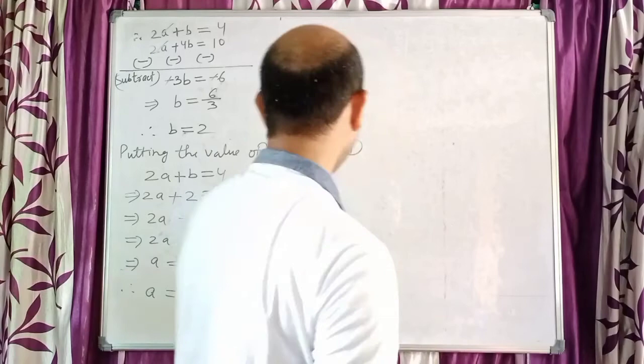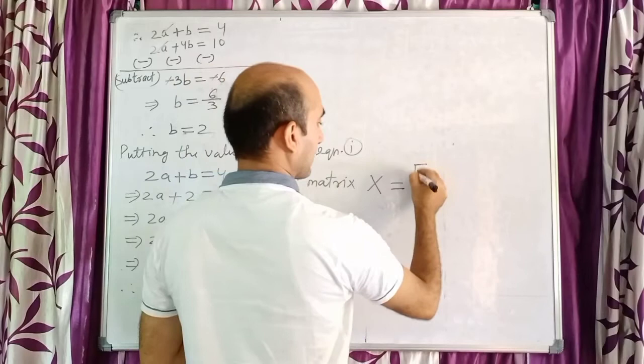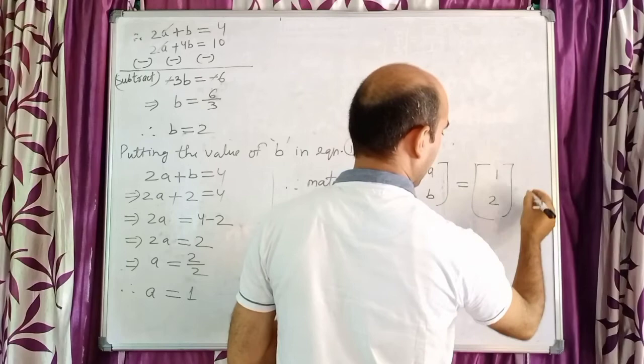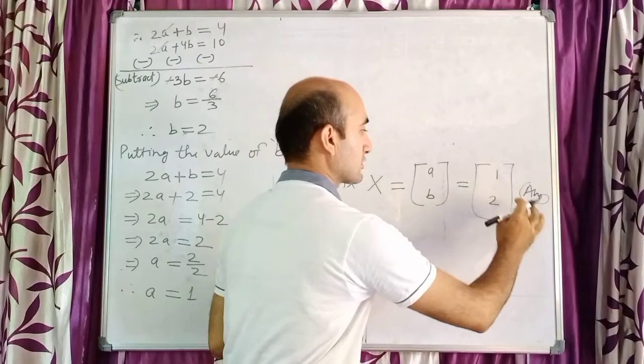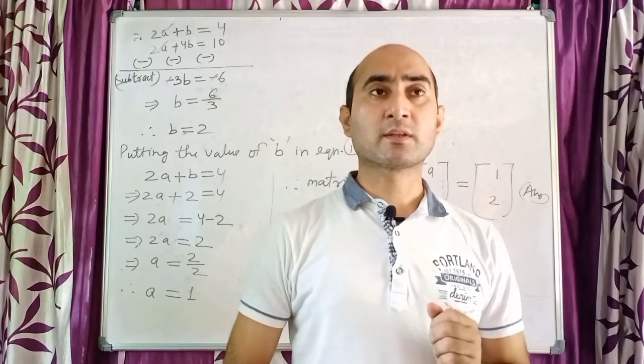Since matrix X was written as [a; b], and a = 1, b = 2, therefore matrix X = [1; 2]. The order of matrix X is 2×1 (first answer), and the value of matrix X is [1; 2] (second answer). A technical question, but not very tough. Thank you!